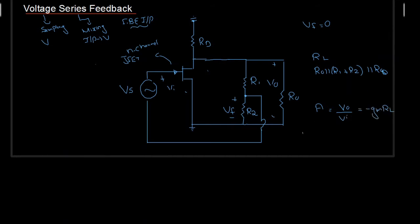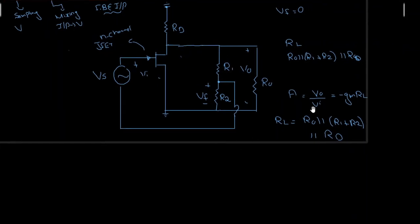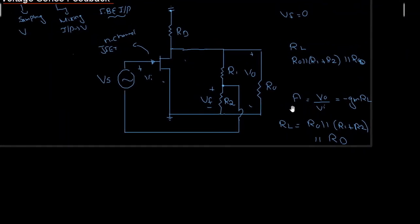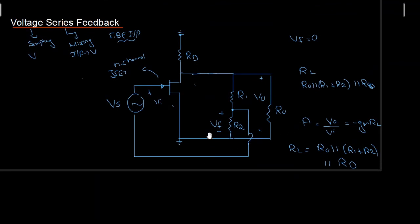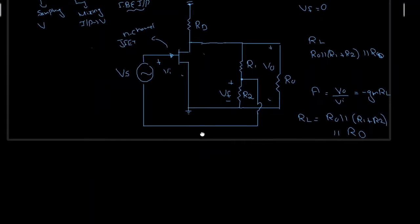Where RL is equal to R0 parallel to R1 plus R2, parallel to Rd. This is my RL, and this is my equation for the voltage gain without feedback.